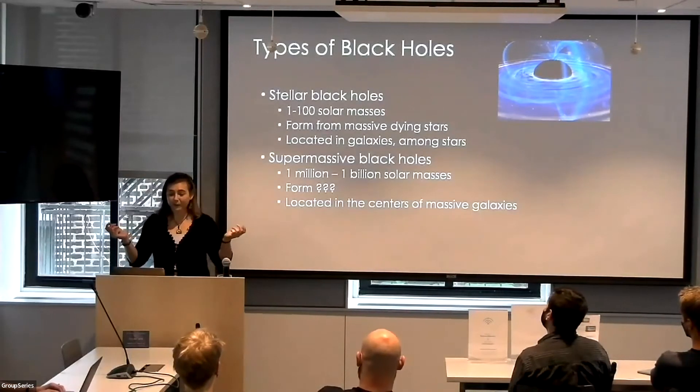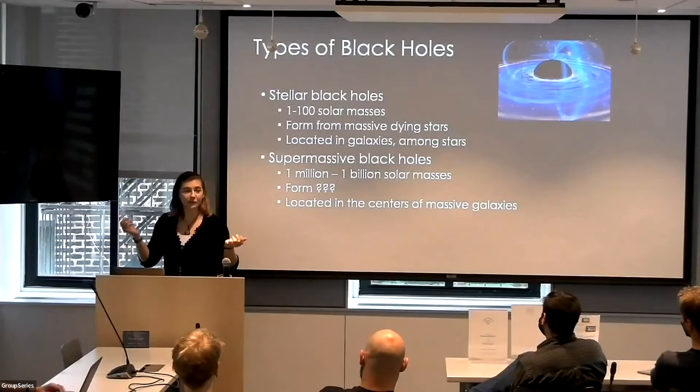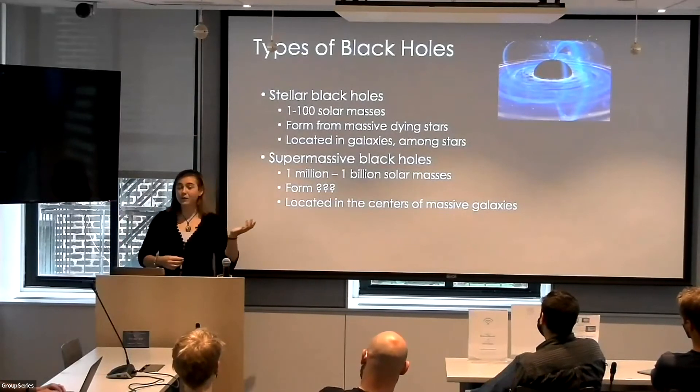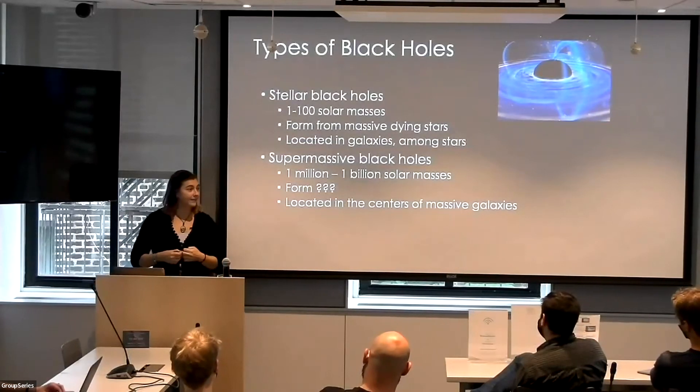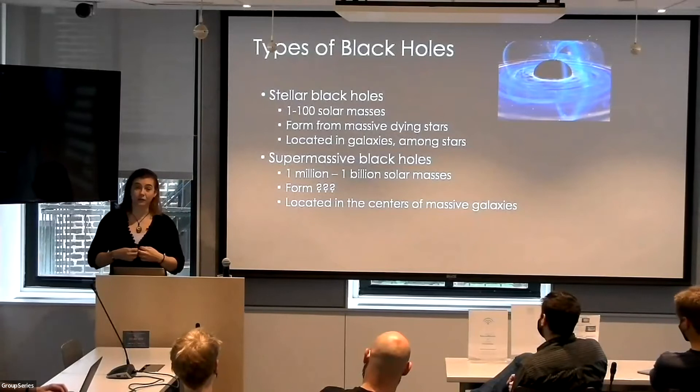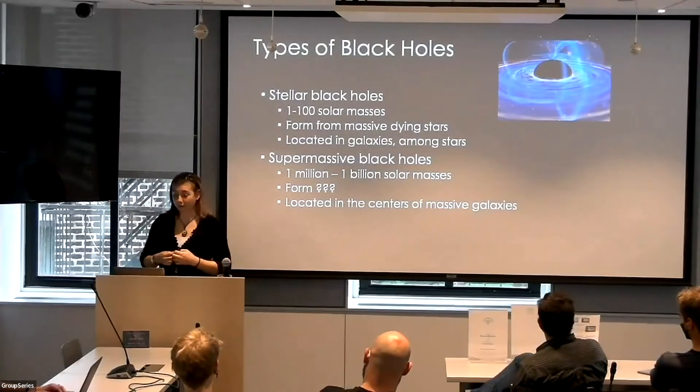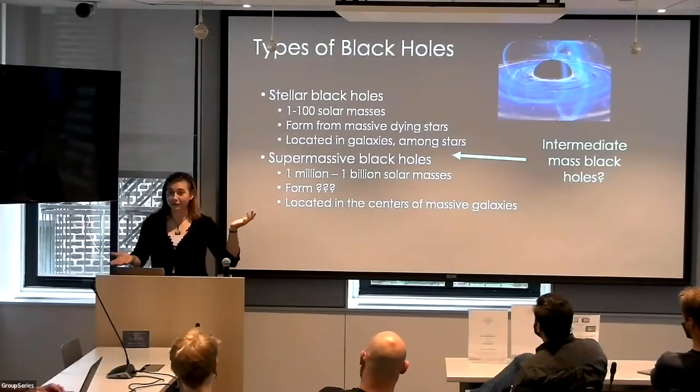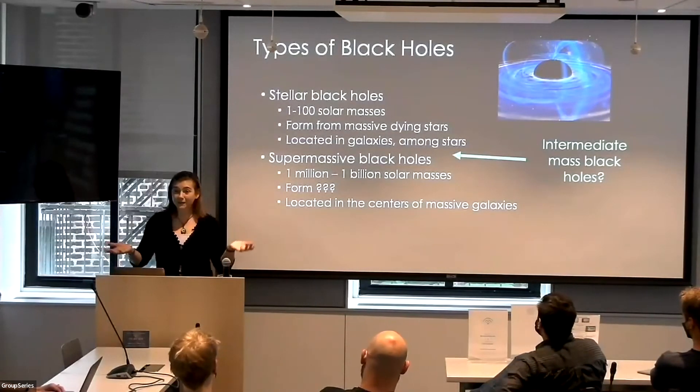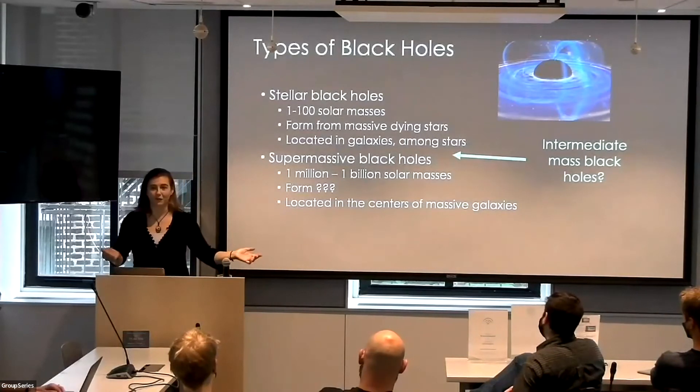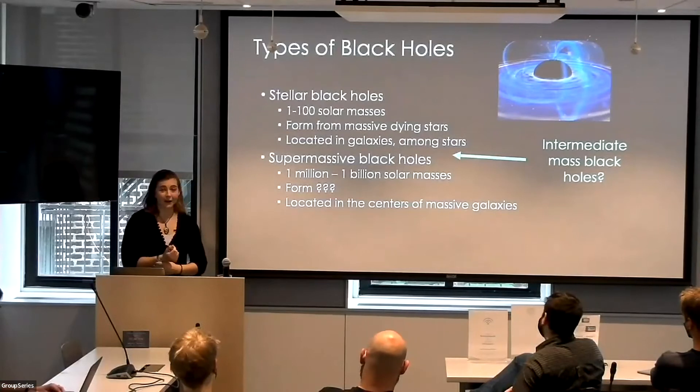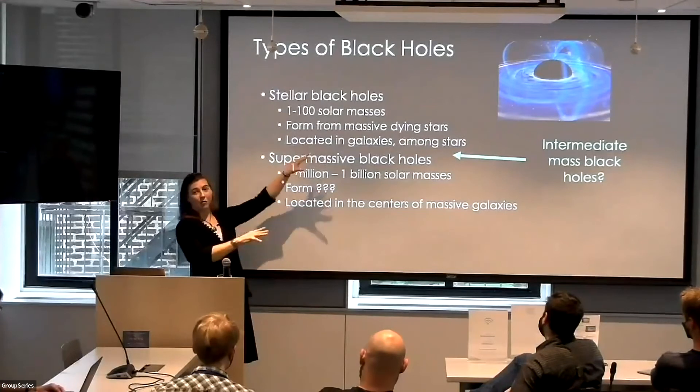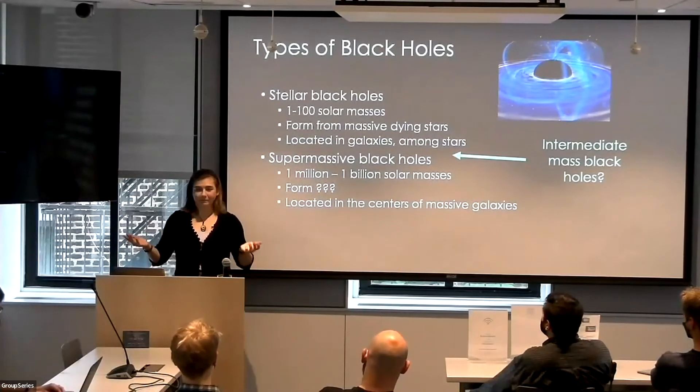And then there are supermassive black holes, which are somewhere between a million and a billion solar masses. They form via question marks. And as far as we know, they're located in the centers of massive galaxies. If they're located in other places, we are not certain about that because we have not found them there. So you may wonder, what is this giant many order of magnitude gap in mass?